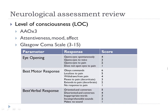The Glasgow Coma Scale — probably many of you have been assessing or documenting this but didn't exactly know what you were doing. It's a neuro assessment. Basically, the higher the number, the more alert and oriented the patient is, and the more intact their neuro system is. The lowest score is a 3 — there is nothing lower than 3. Everybody gets at least a 3 for being alive. The brain-dead person gets a 3. We all here get a 15, maybe a couple of you have a 14.